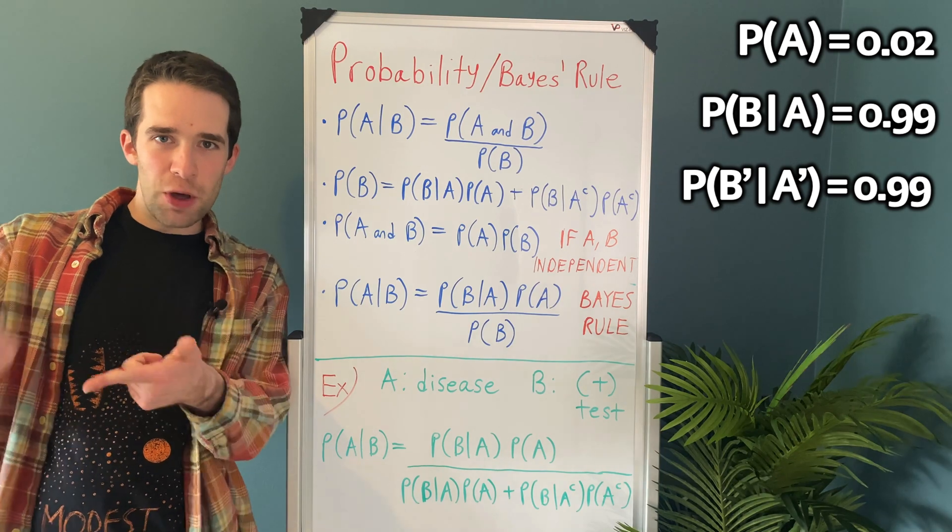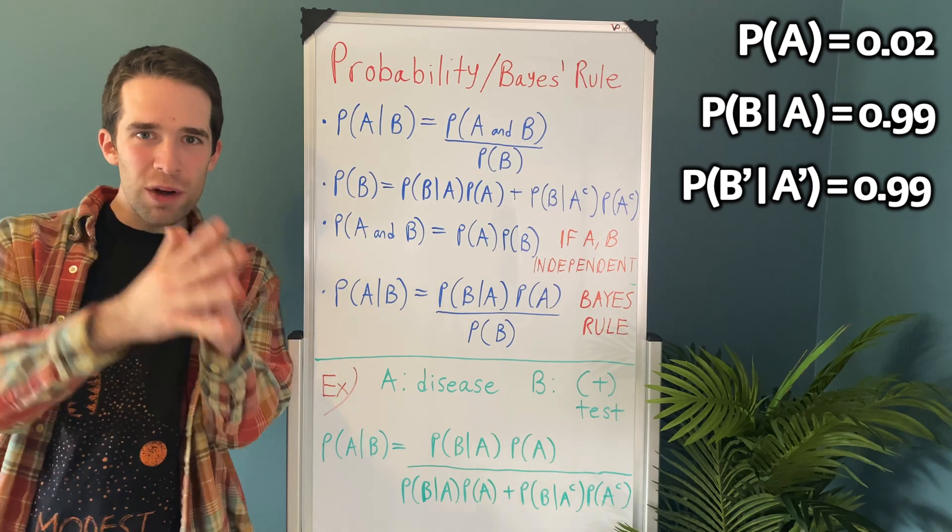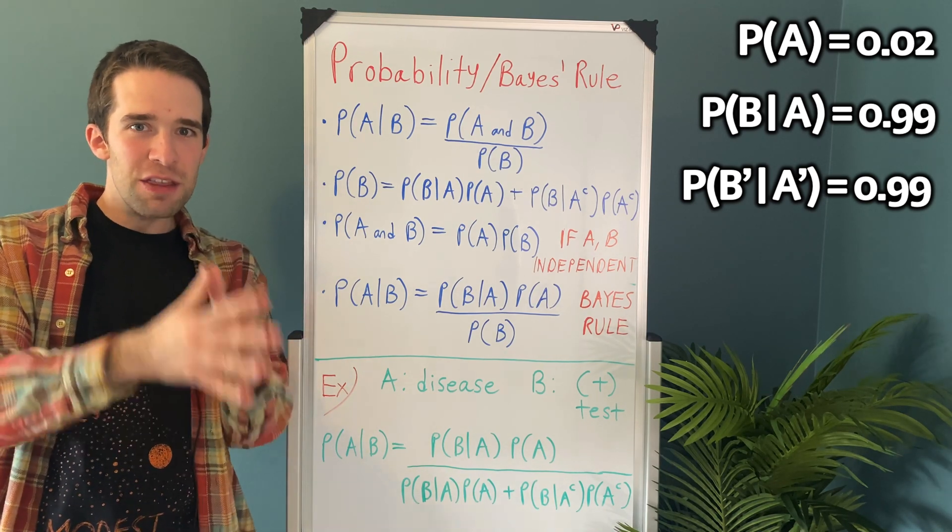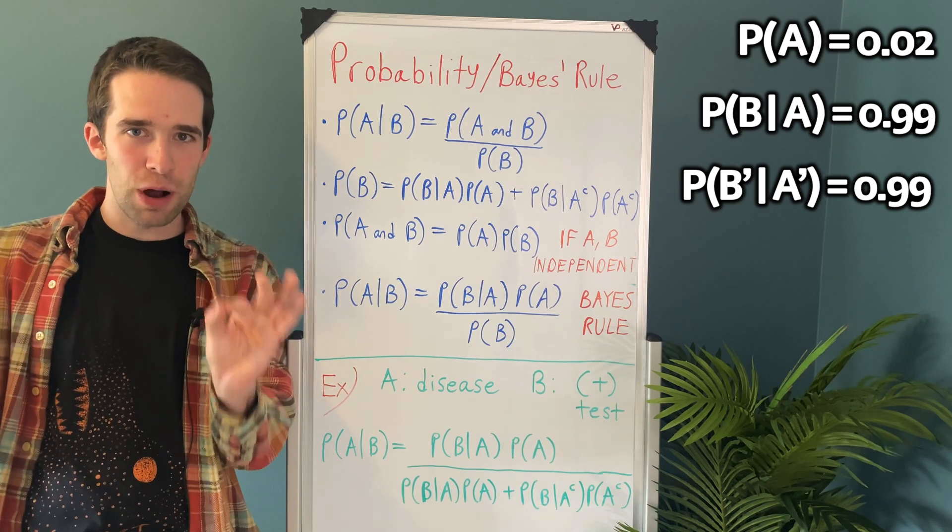But now we want to flip the question, and we want to ask, let's suppose you get a positive test, what's the actual probability that you have the disease then? So we can use Bayes' rule to tackle this problem.